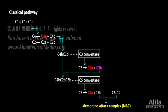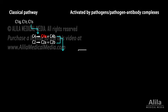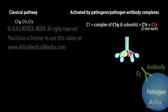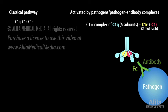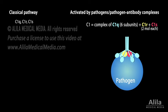The components of the classical pathway are labeled C1 to C9. This pathway can be activated either by pathogens or pathogen-antibody complexes. C1 consists of C1Q, C1R, and C1S. C1Q can bind to constant regions of antibodies or directly to the pathogen surface. This binding activates C1R, which then cleaves and activates C1S.